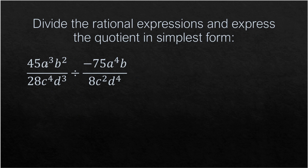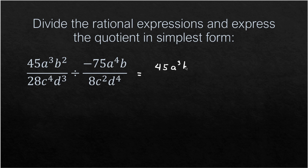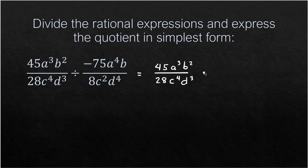Let us take a look at this example. We have 45A³B² all over 28C⁴D³, divided by negative 75A⁴B all over 8C²D⁴. First, we rewrite this as multiplication: 45A³B² divided by 28C⁴D³, times the reciprocal of the second rational expression.